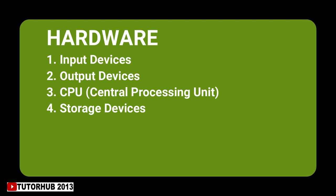Input devices allow us to send information to a computer. Output devices allow us to receive information from the computer. Output may be printouts from a printer, sound from the speakers, or images on the monitor or projector.